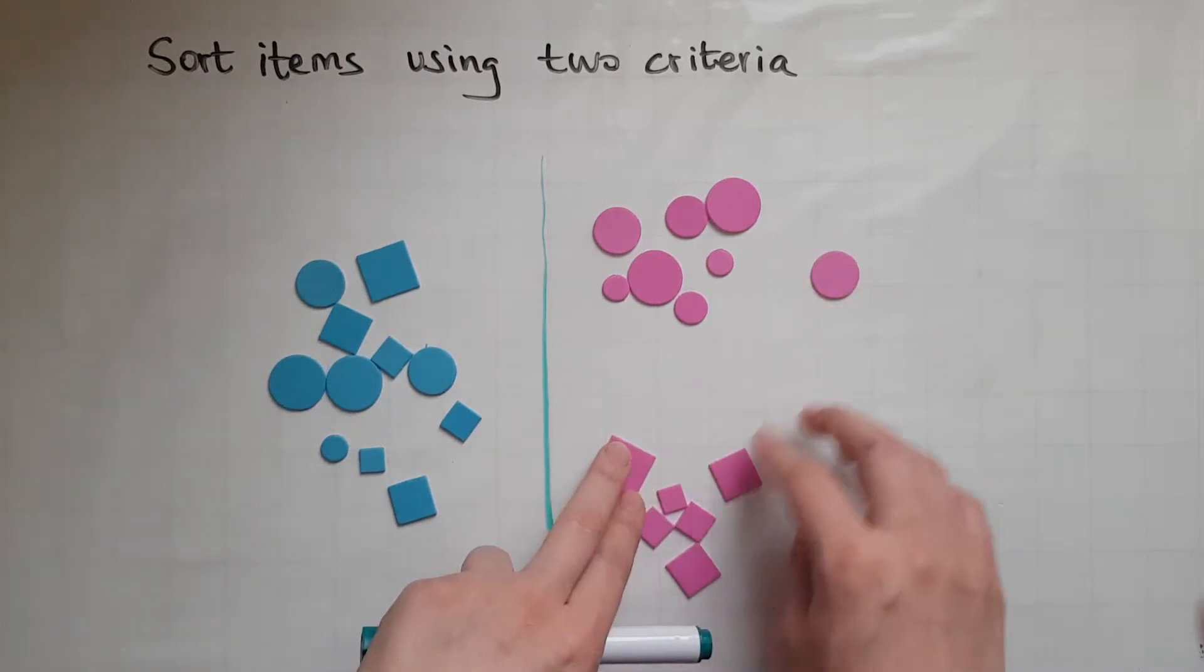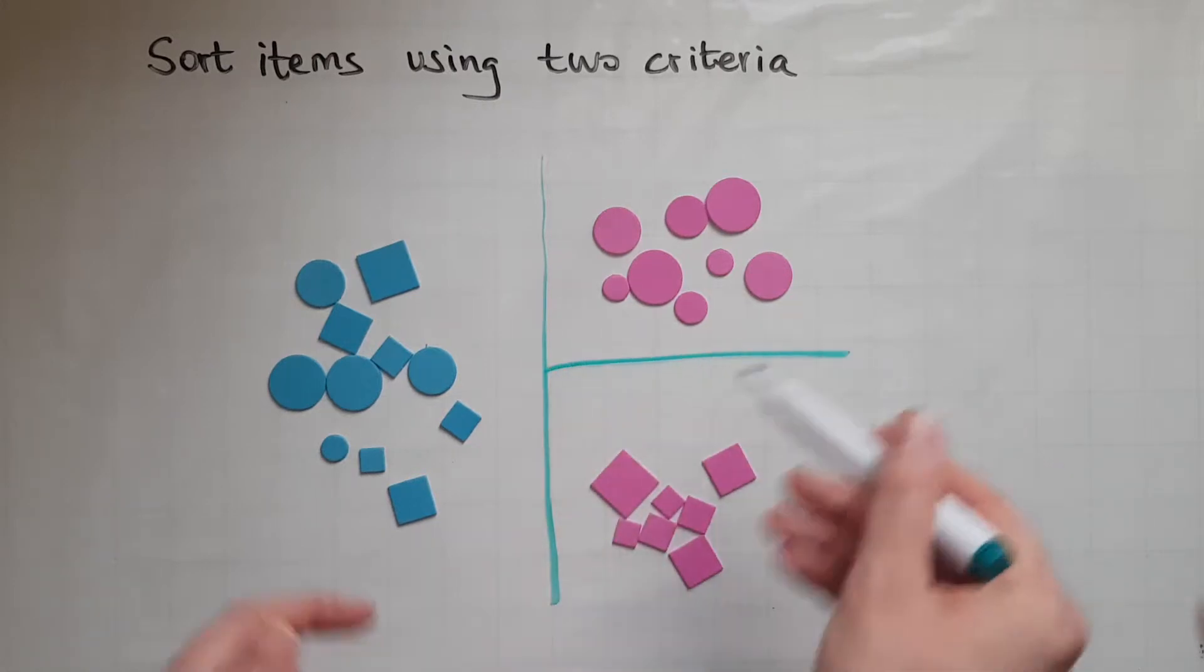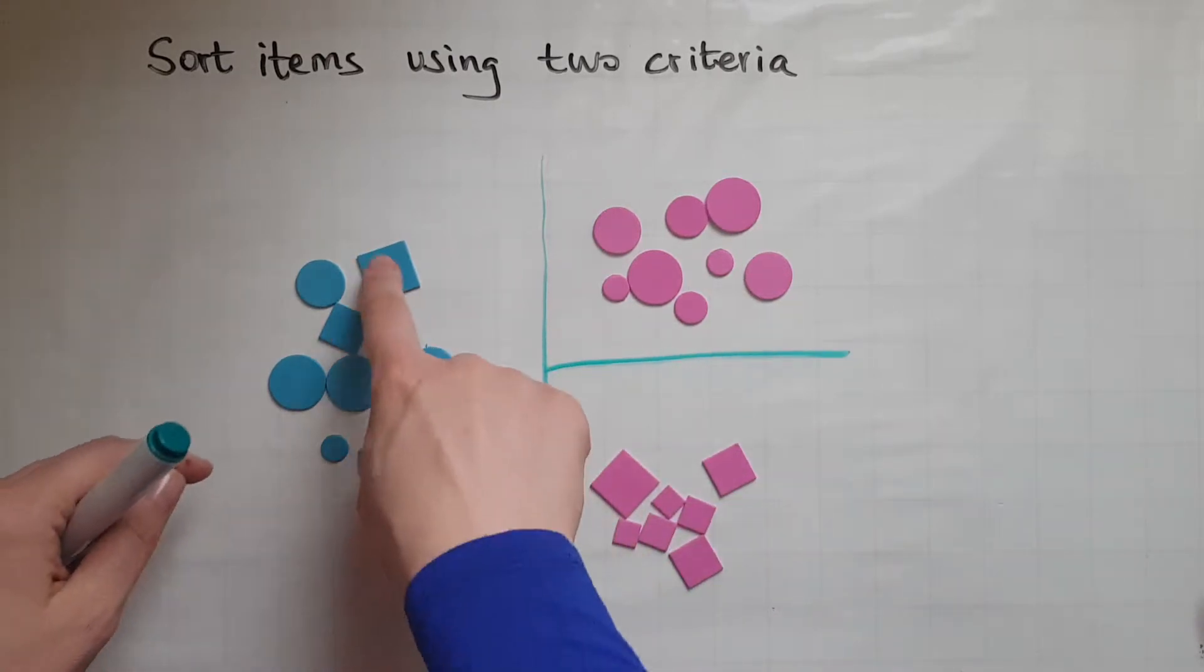So I'll separate the circles from the squares and I'll do the same on the other side.